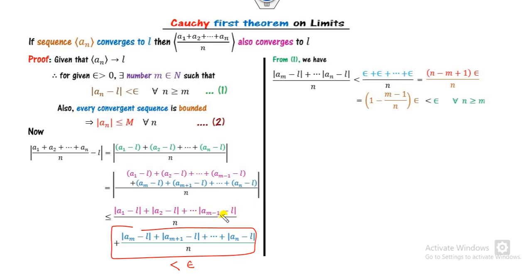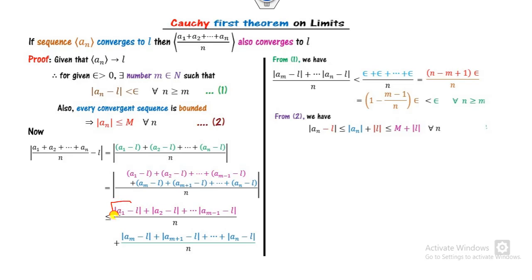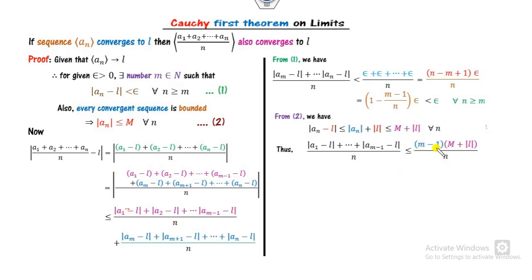For the part with terms where the index is less than m, equation 1 is not applicable. So we use the bounded property: |a_n − l| can be written in terms of the bound — for all n less than m, this is less than or equal to the bound M plus |l|. Therefore the first part is less than (m − 1) times that bound, divided by n.